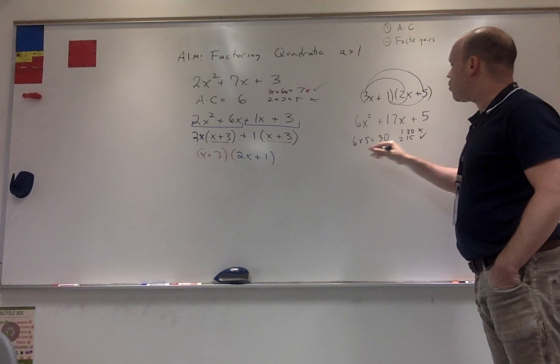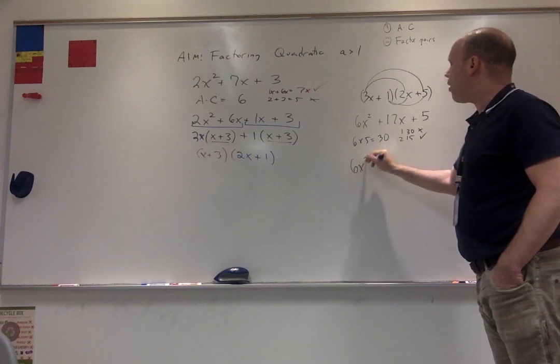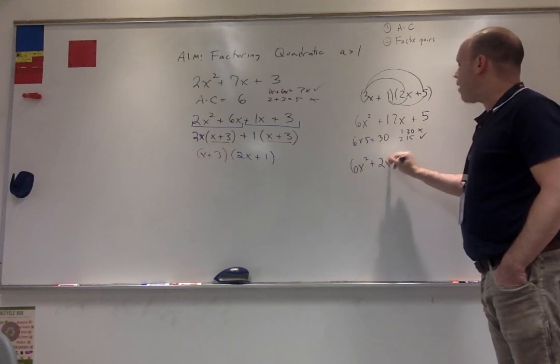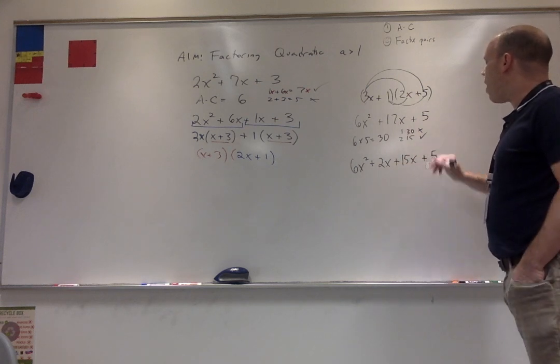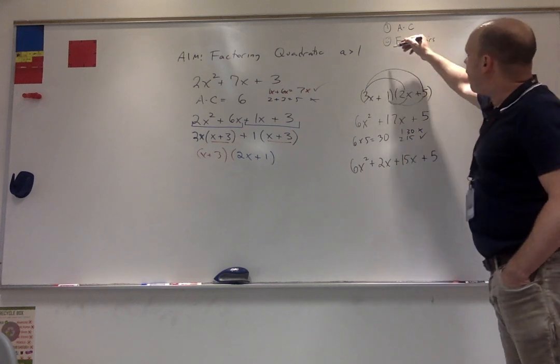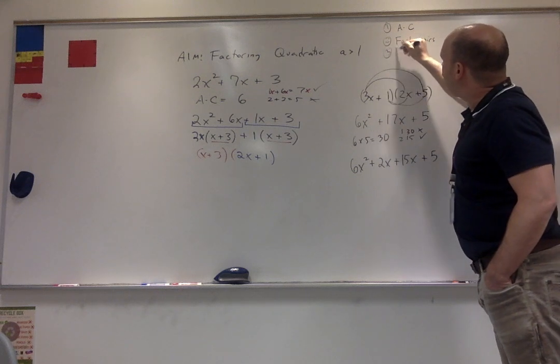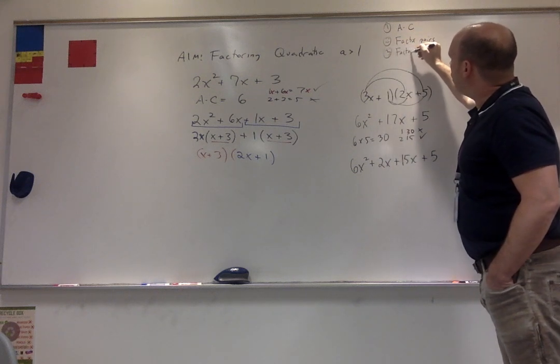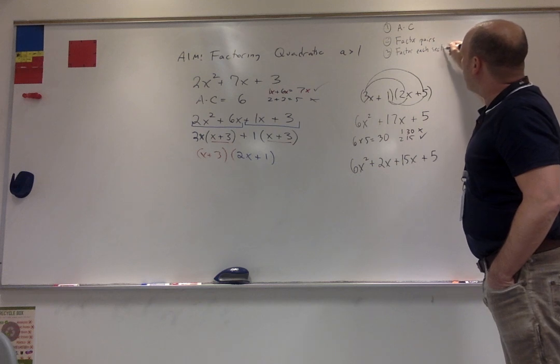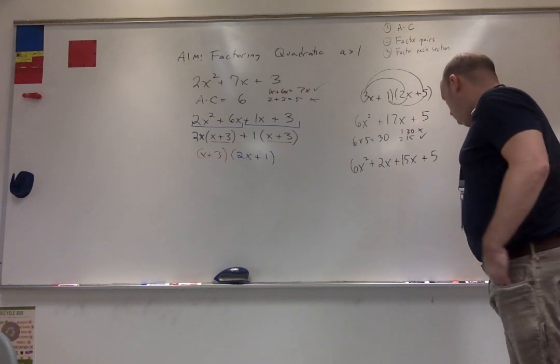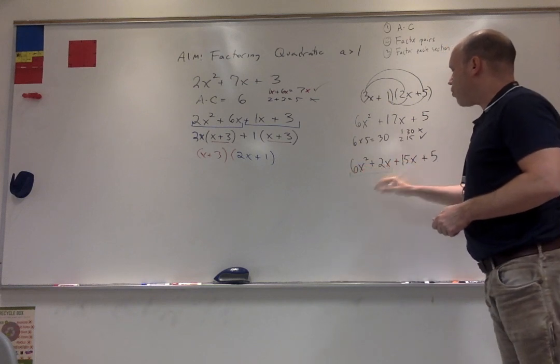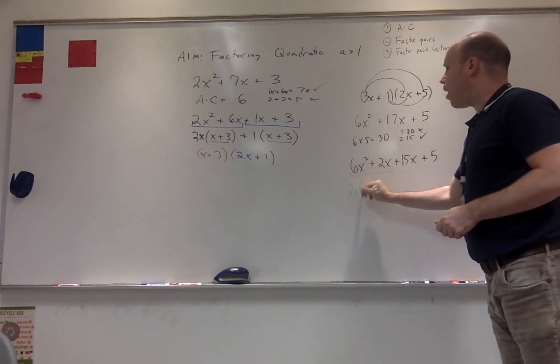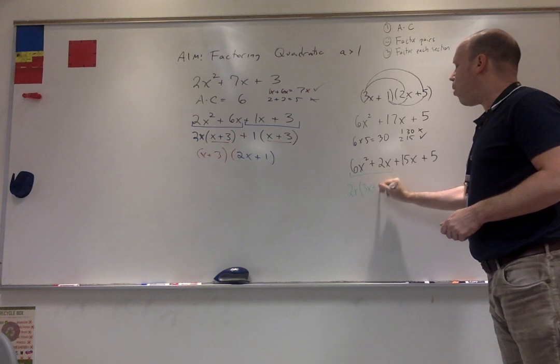Rewrite this as 6x squared plus 2x plus 15x plus 5. Step 3, factor each section. Well, my first section, let's call this green, this factors to 2x times 3x plus 1.